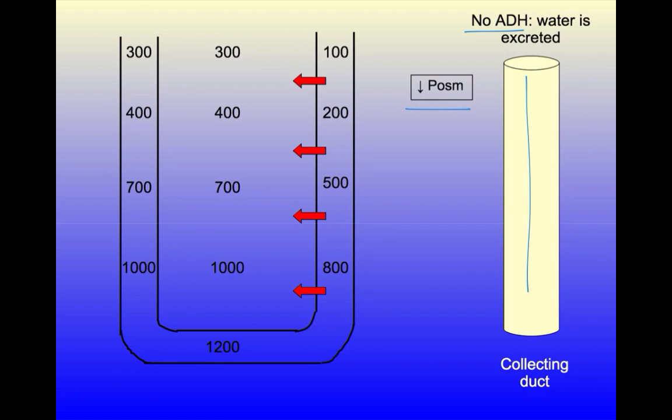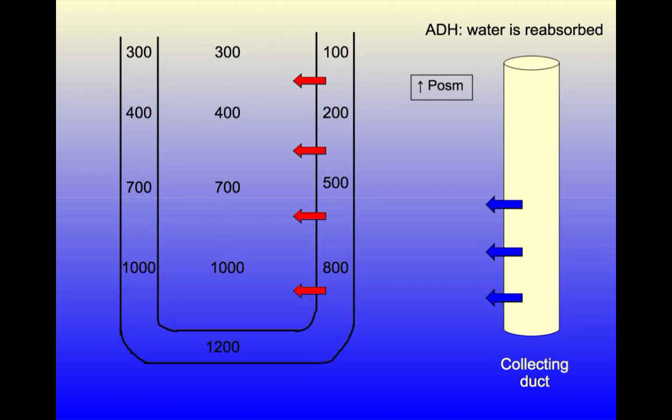But if plasma osmolality has crept up, and the kidney is trying to conserve water to bring it back down, ADH will be secreted, aquaporin channels will open in the collecting duct, and water will be reabsorbed and returned to the circulation via the vasa recta.